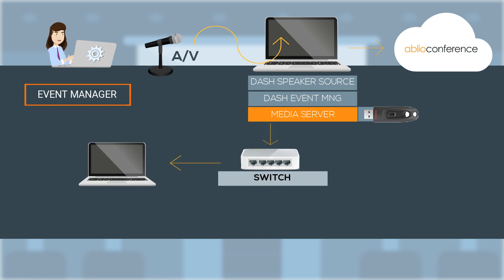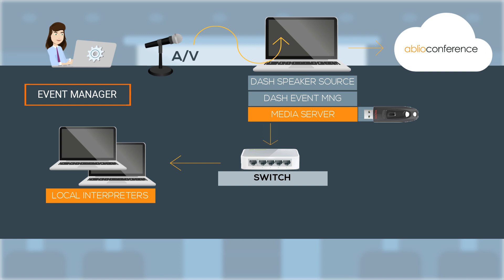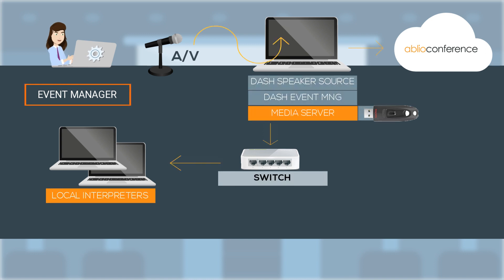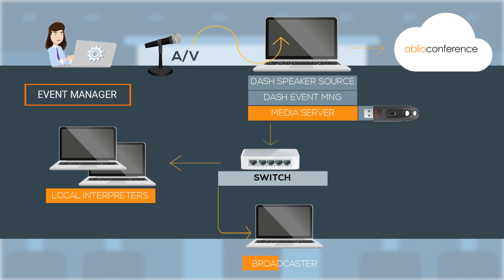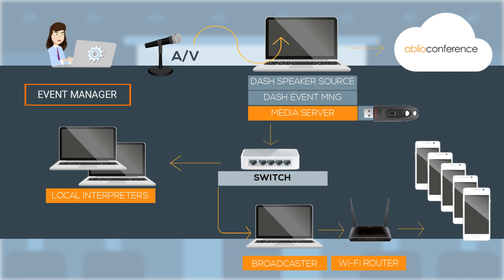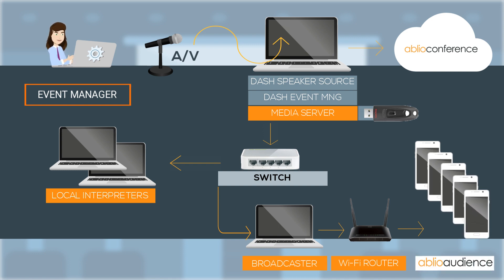At the venue, you need to input the program signal — which is the speaker's audio-video signal — into the assigned computer in order to distribute it within the Ablio Conference system. And you need to properly install the wireless router and the broadcaster unit that have been previously configured by the same system.